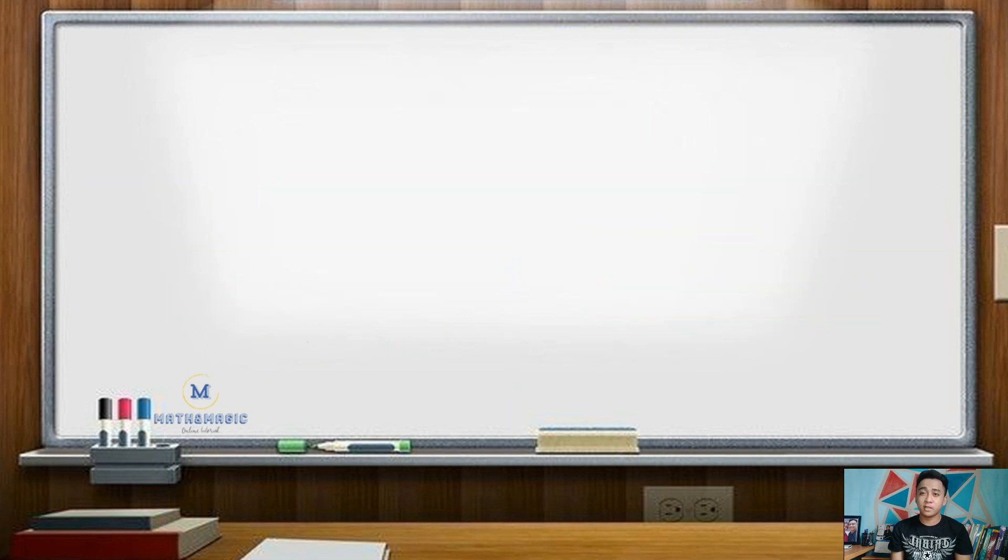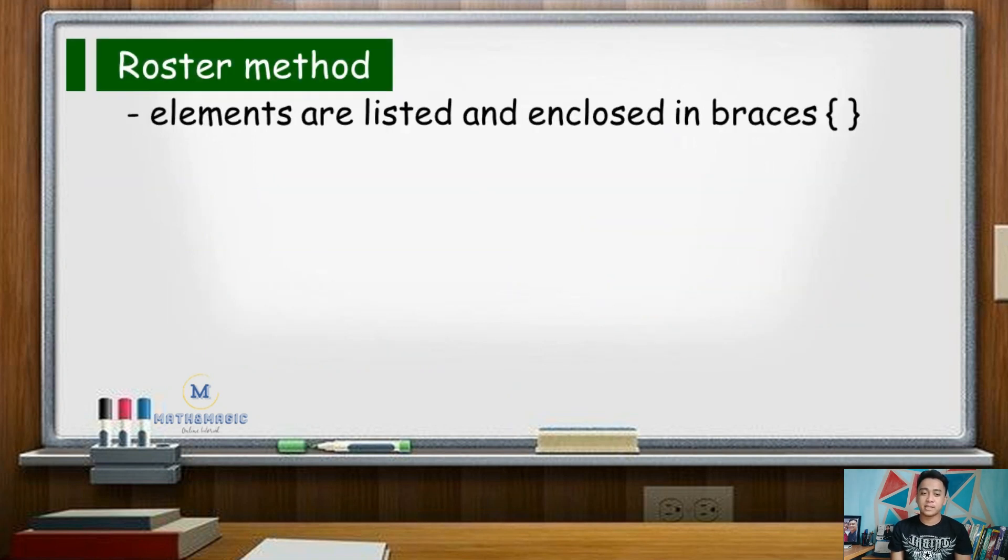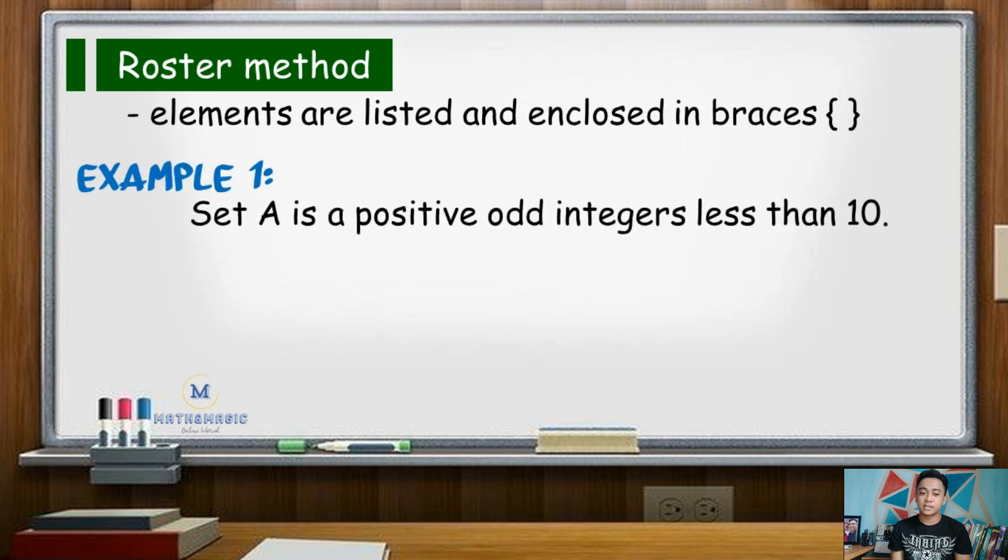In roster method, each element of the set is listed and enclosed in braces. Say for example, set A is a set of positive odd integers less than 10. So, writing this in roster form, set A contains the elements 1, 3, 5, 7, and 9.